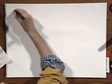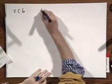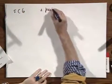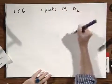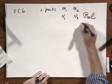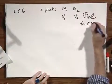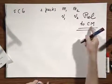And this is 5C6. I believe it's our last problem, at least the last one that I will do. Not sure though. I have two pucks, M1 and M2, and they have velocity V1 and V2 relative to the center of mass. It's very important. It's not relative to my lab, it's relative to the center of mass.